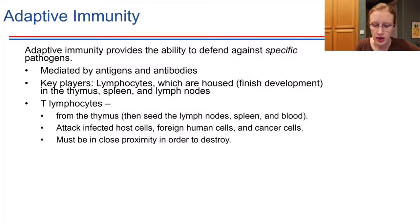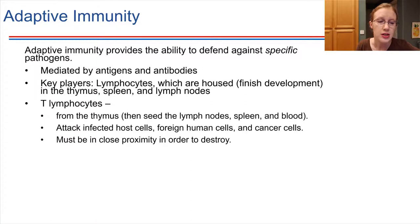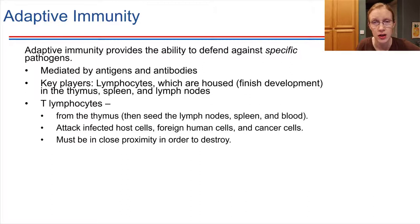Once T lymphocytes are finished with their development, they travel to a few other sites in the body. They seed all the lymph nodes, which we have many of throughout our bodies, and also the spleen and the blood — they do circulate in the blood. What T lymphocytes do primarily is attack cells that have some sort of a problem, such as cells infected with a virus. T cells are specialized enough to recognize an infected cell from a healthy one, and they only attack infected cells or cells displaying some other type of problem.